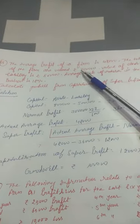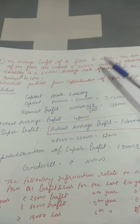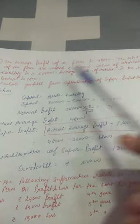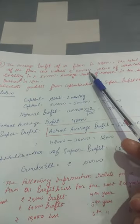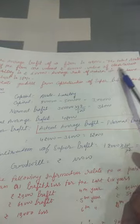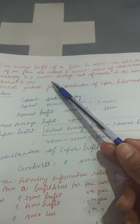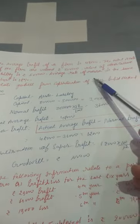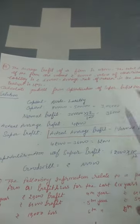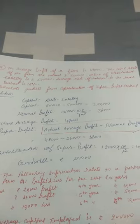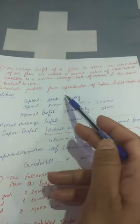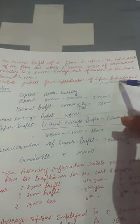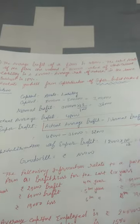The average profit of a firm is 48,000 — this is the actual average profit. The total assets of the firm are valued at rupees 8 lakh, and the value of other current liabilities is 5 lakh. The normal rate of return in the same business is 12%. We need to calculate goodwill using the capitalization of super profit method.